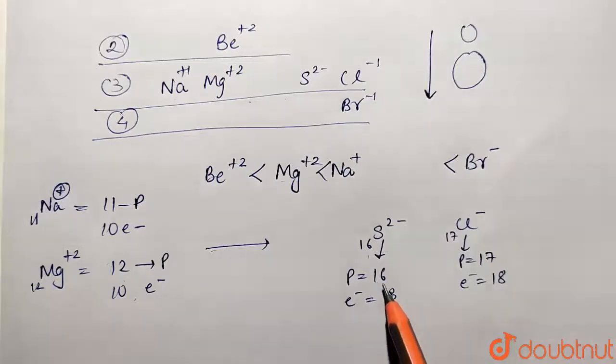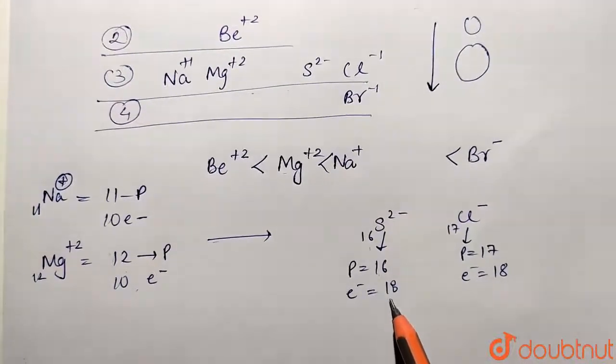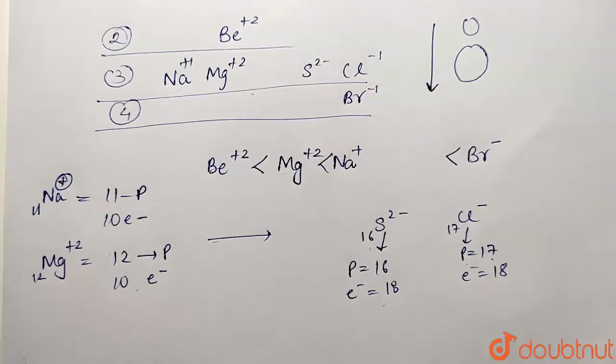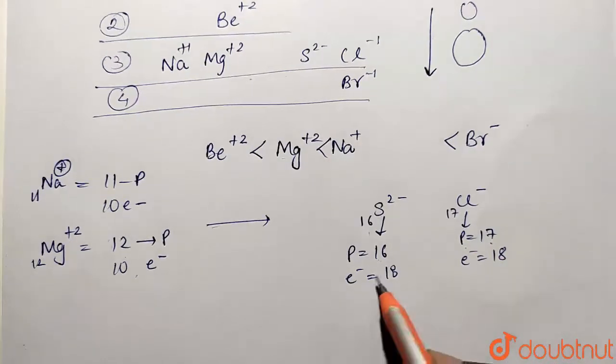Now 16 protons controlling 18 electrons. So 16 protons attracting 18 electrons - so which will be of larger size? Because here forces of proton is going to be somewhat less as compared to this one.